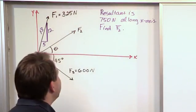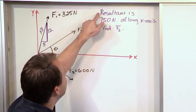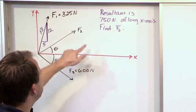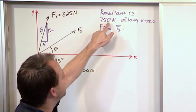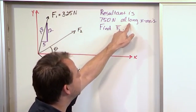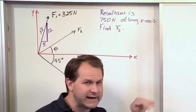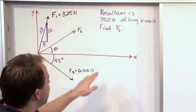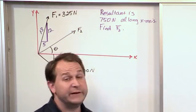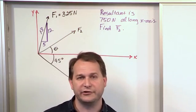However, we're given a critical piece of information. The resultant, which means the summation of all three of these vectors, is 750 Newtons directed along the x-axis. Find F2, which means find the magnitude of F2 and the direction of F2.